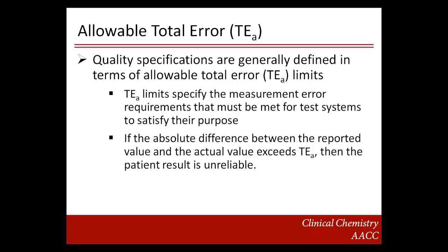The allowable total error limits specify the measurement error requirements that must be met for patient results to be fit for use. Every patient result has some kind of measurement error, even when the test system is in control. But if there is an out-of-control condition, additional error is added. If the difference between the value reported and the actual value is greater than the specified allowable total error limit, then we consider the patient result unreliable.